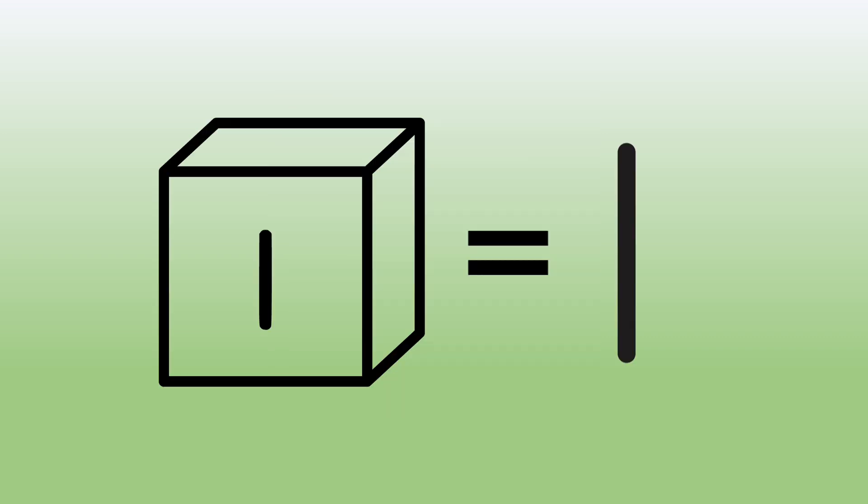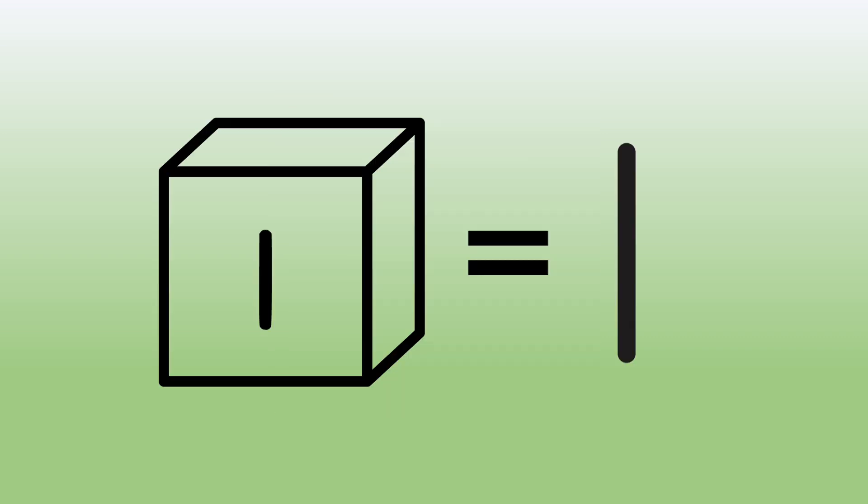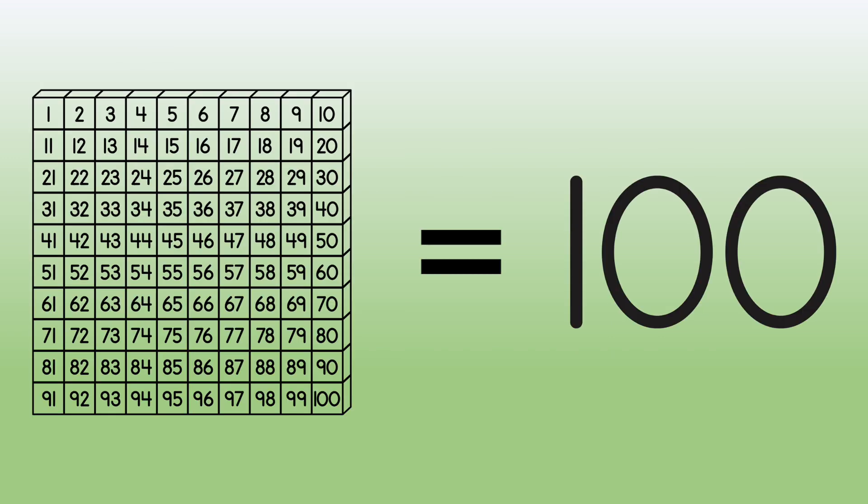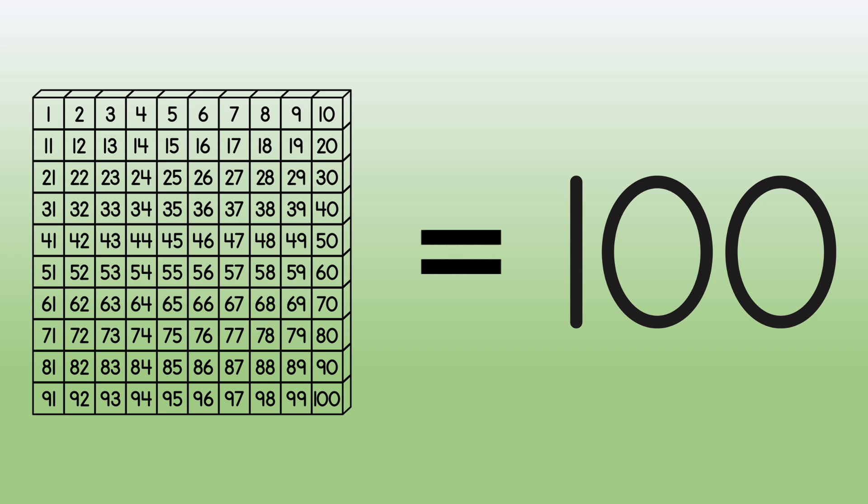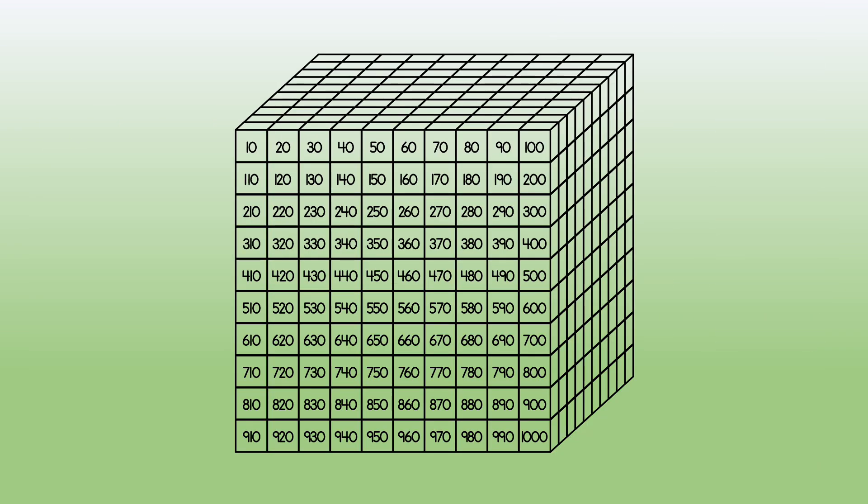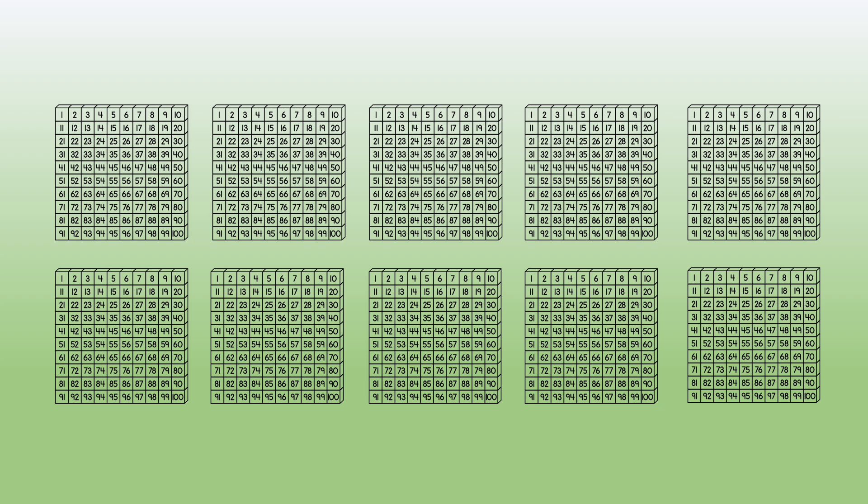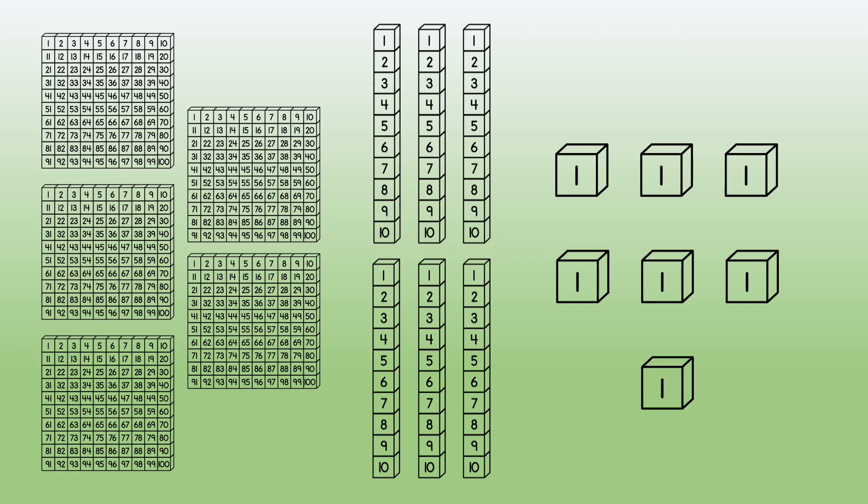A bit shows one. A long shows ten. A long is ten bits, ten ones. A flat shows a hundred. A flat is ten longs, ten tens. A cube shows one thousand. A cube is ten flats, ten hundreds. We can show numbers using base 10 blocks.